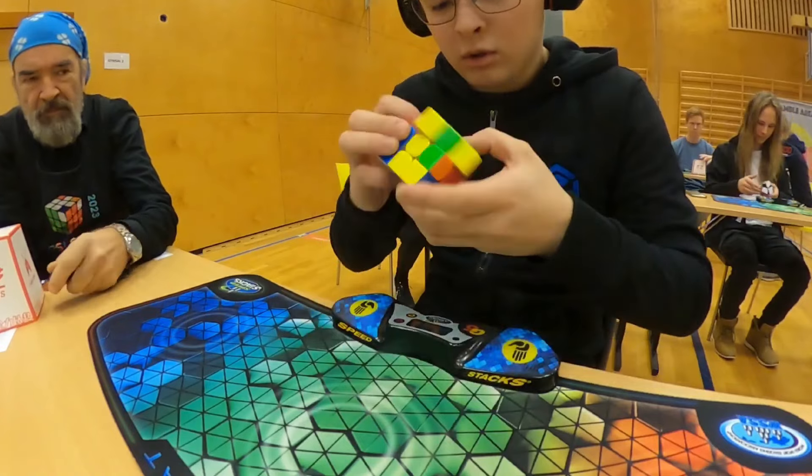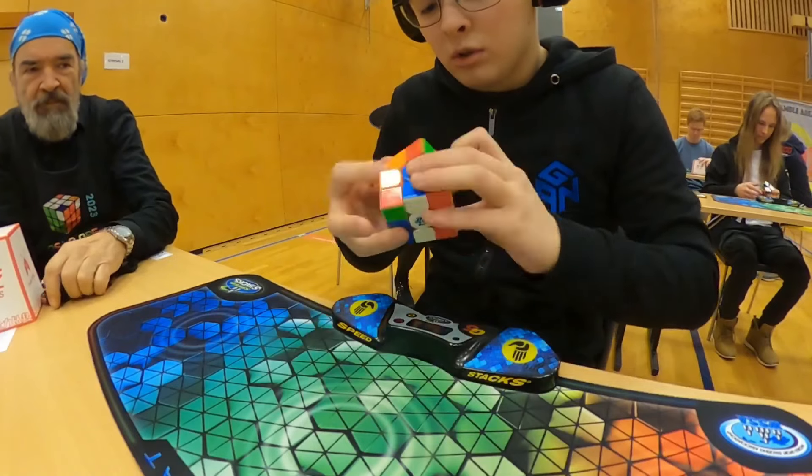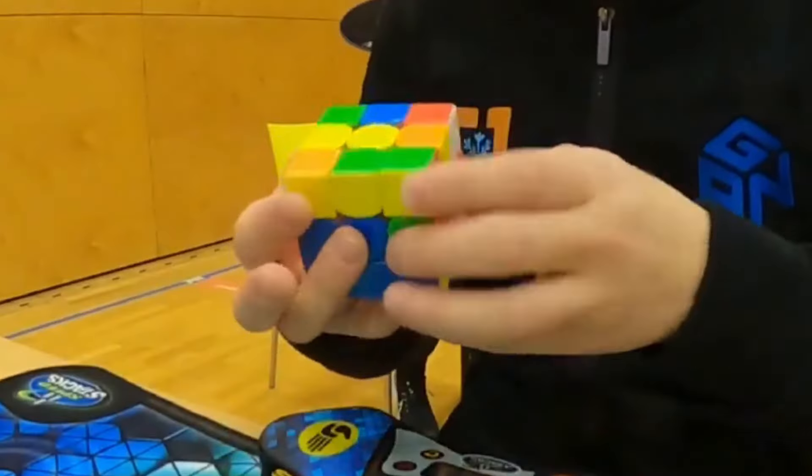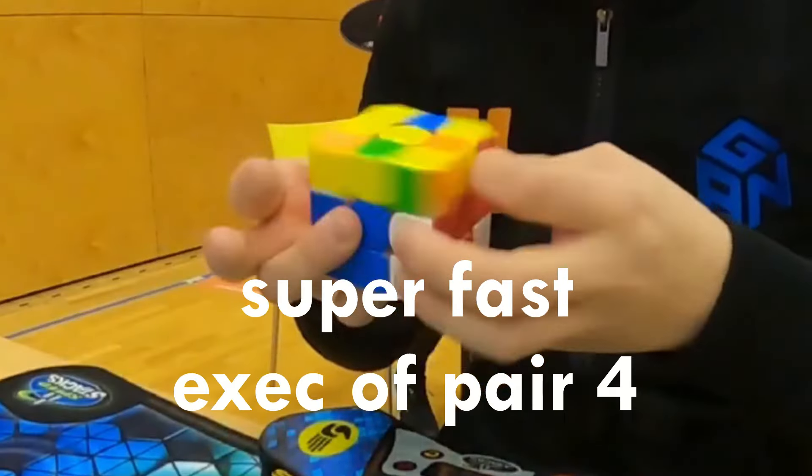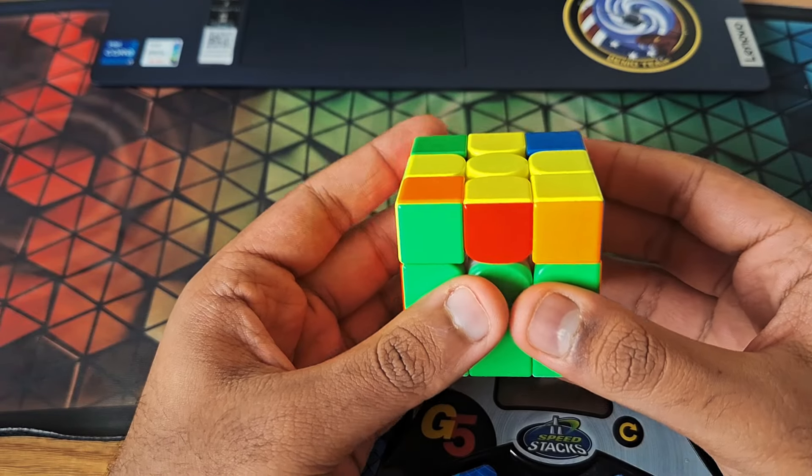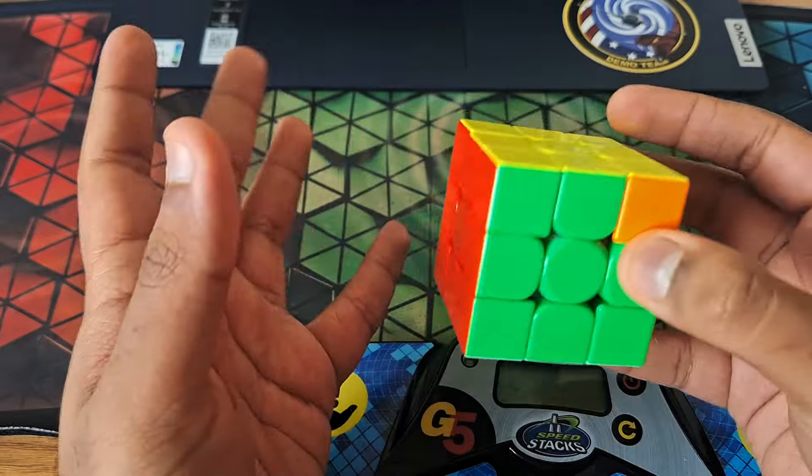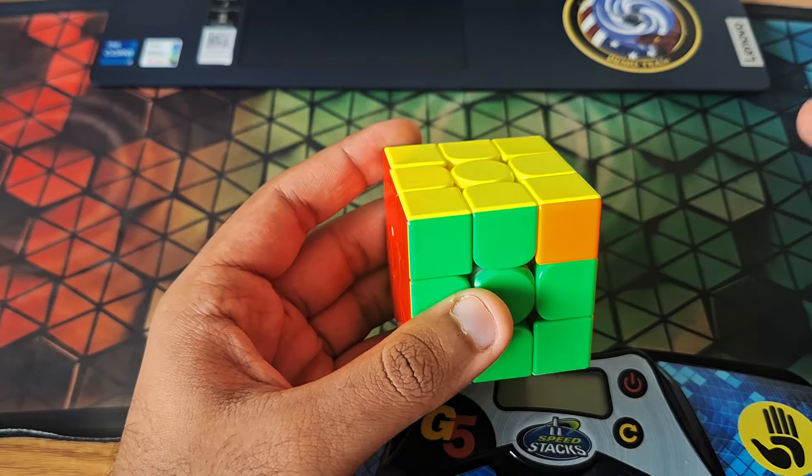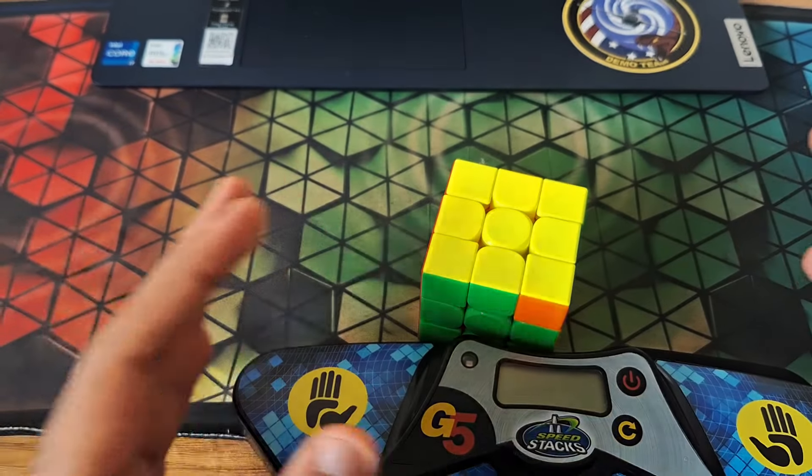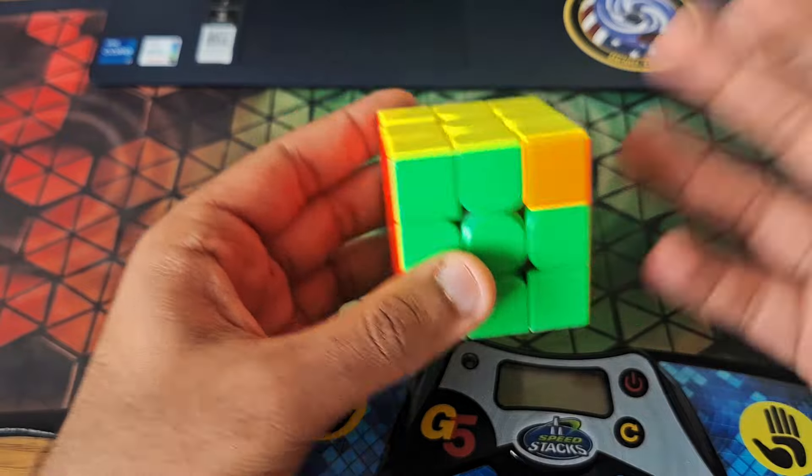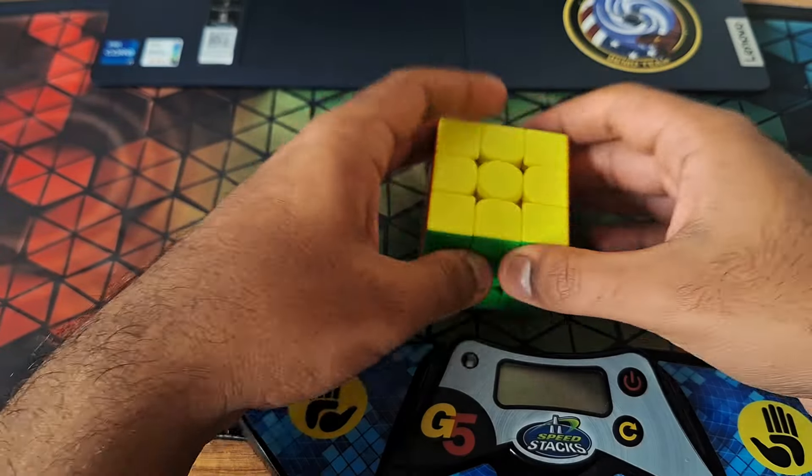For example, in this solve by Kim Roger Haraldson, he is able to swiftly re-grip his left hand to do this pair from the back as he does a U move with his right hand. However, if the AUF between the pairs was a U' instead of a U, it would be better to do the re-gripless execution. Of course, it's difficult to think of all these things during a timed solve, which is why it's worth it to do untimed solves to practice these things.